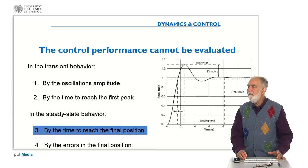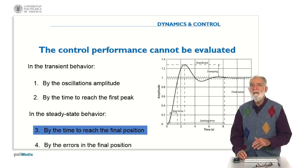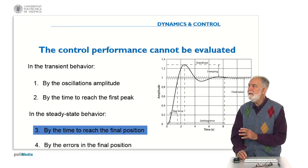Well, clearly, the time to reach the final position is a characteristic of the transient behavior, but is not a characteristic of the steady state behavior. The steady state behavior is characterized by the errors, mainly by the errors in the final position.